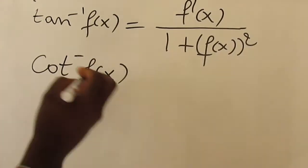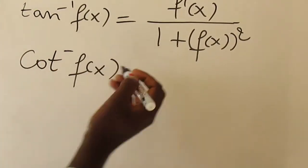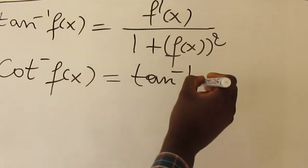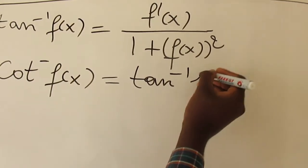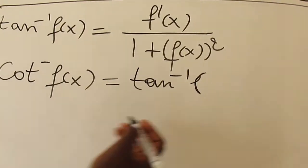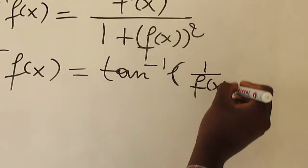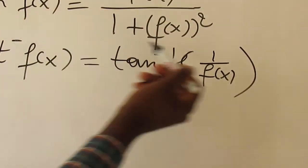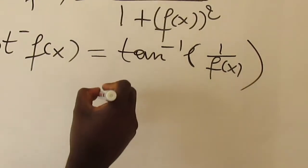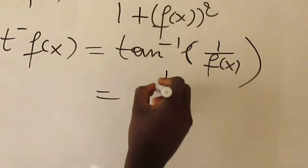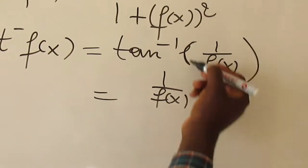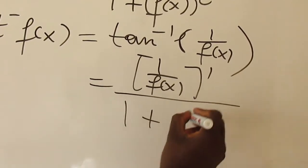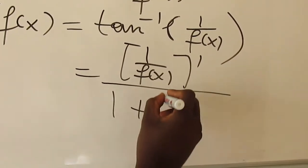To differentiate arc cot, you need to know that cot is the inverse of tan. So if you want to invert this, it's going to give you arc tan of 1 over f(x). Then you already know the derivative of arc tan. So here, you derive 1 over f(x), then divide over 1 plus (1 over f(x)) squared.